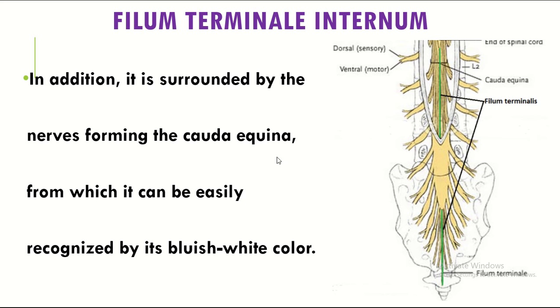In addition, it is surrounded by the nerve roots forming the cauda equina, from which it can be easily recognized by its bluish-white color.